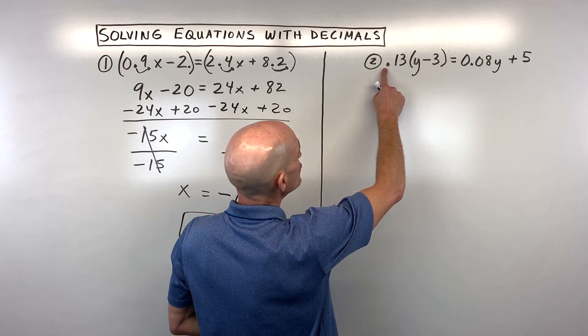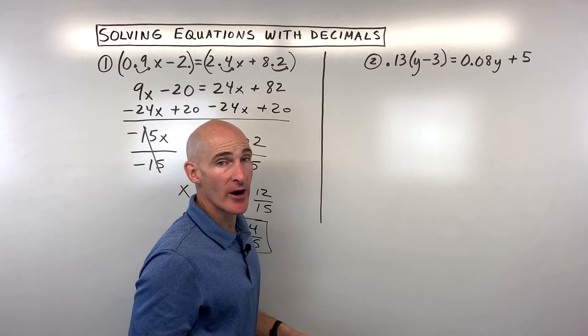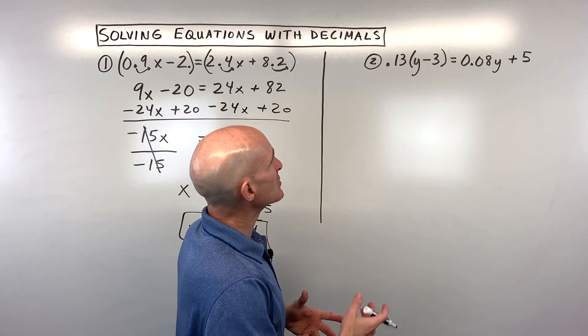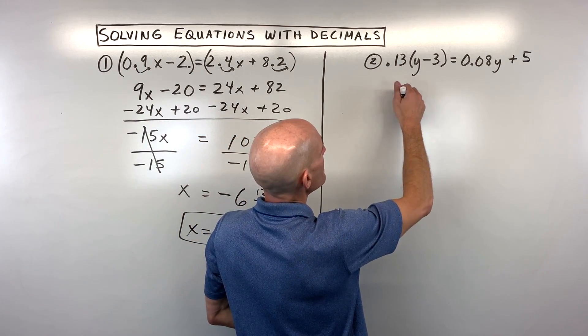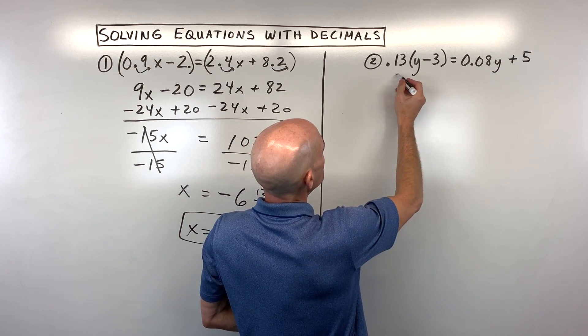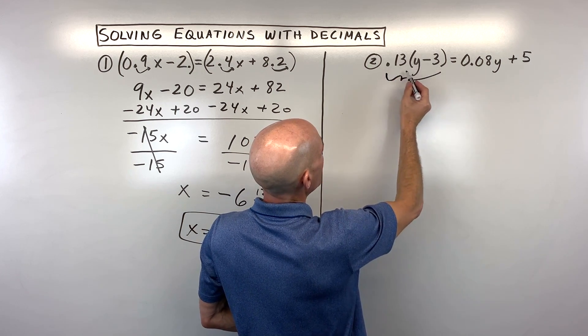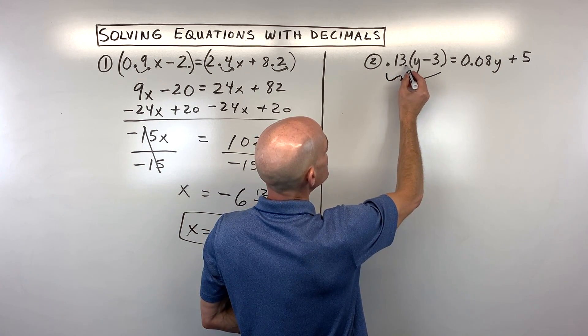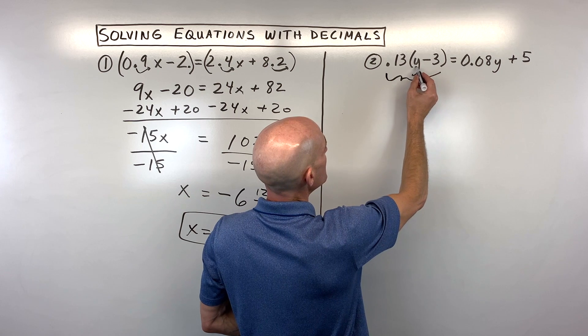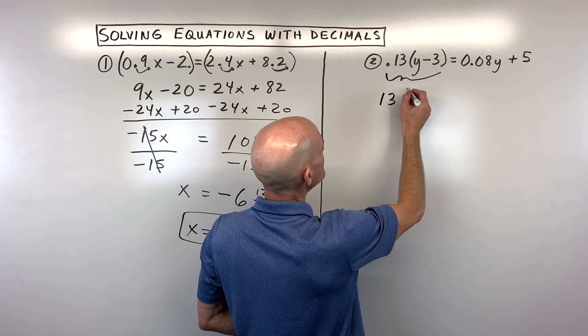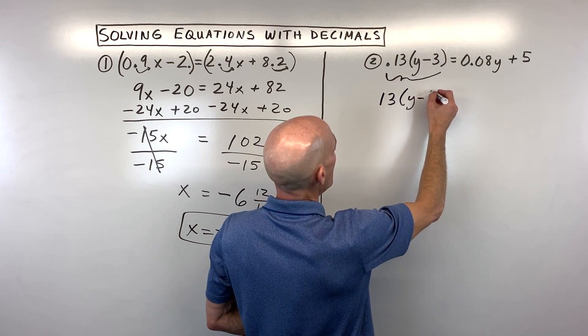And the nice thing about multiplying by 100 is it moves the decimal two places to the right. If you multiply by a thousand it moves it three places to the right, but in this case we really only need to move it two places. This is a little bit trickier problem because you see how this whole quantity is like a group. So when we multiply this group by 100 we're just going to move this decimal point—not on the 3, not on the y, just on the 0.13. So that's going to give us 13y-3.